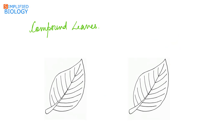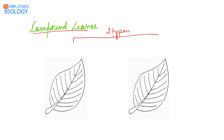In compound leaves, the lamina is broken up according to the incision in the lamina. Compound leaves are of two types: pinnately compound and palmately compound.